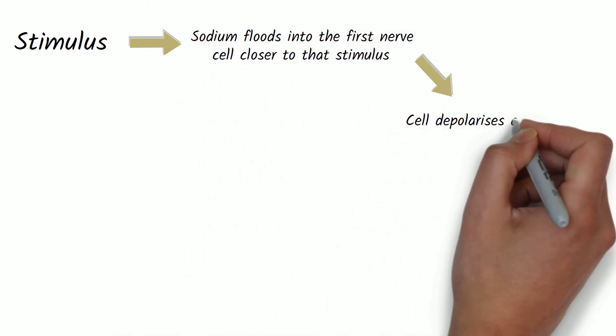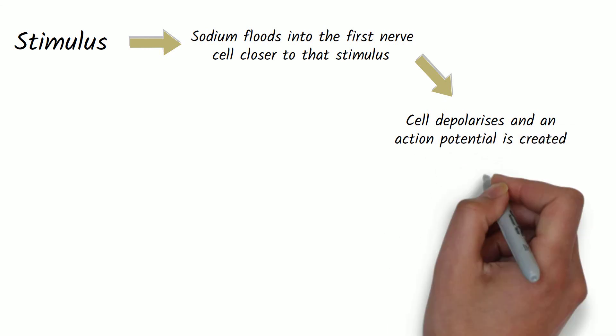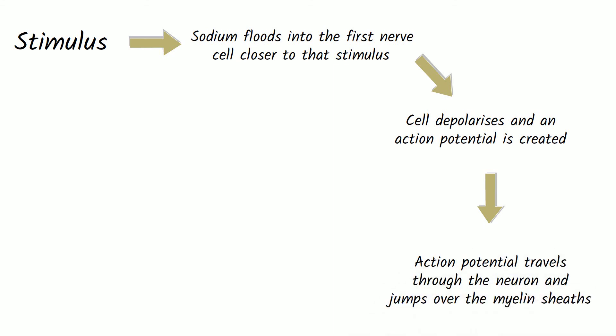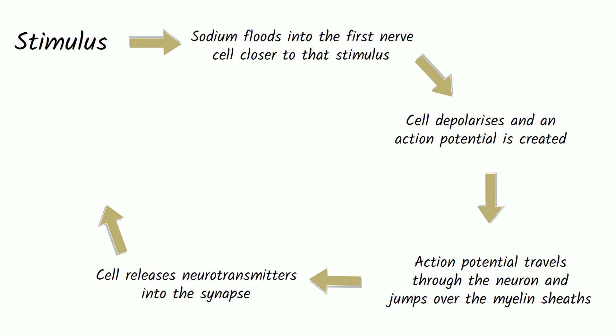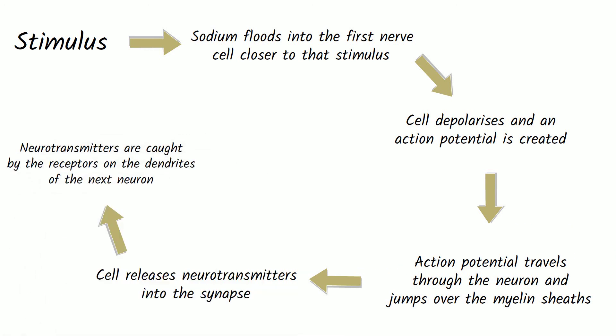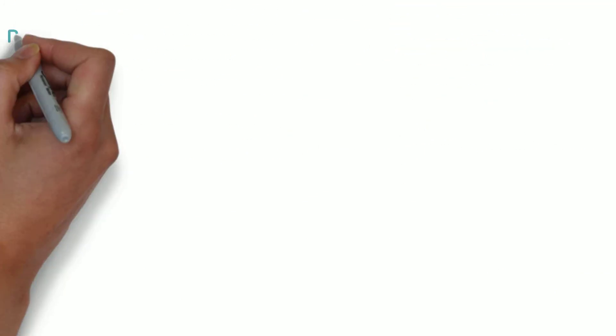So basically when there is a stimulus, it causes sodium to flood into the first nerve cell closer to that stimulus. This sodium, if it reaches the threshold, causes the cell to depolarize and an action potential is created which will then travel through the neuron. It will jump over the myelin and the axon and then reach the axon terminal. Then this action potential induces the cell to release neurotransmitters which were stored in the cell to begin with, and these neurotransmitters are released in the synapse and then caught by the receptors on the dendrites of the next neuron. Then the whole process is repeated until the impulse reaches your brain. It sounds quite long, but this actually happens in milliseconds.